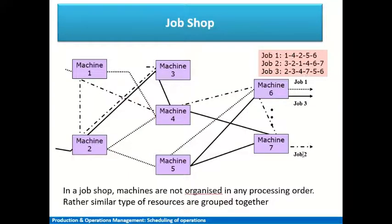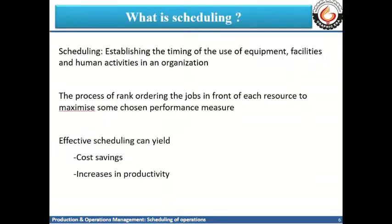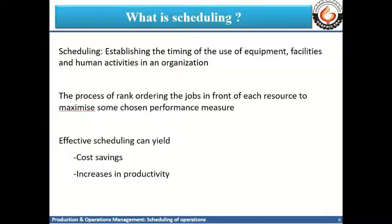Similarly, we can see that jobs two and three also have their own sequences. Once we have a fair understanding of shop configuration, we can talk about how to order multiple jobs in a shop for processing by various machines. This concept brings us to the term scheduling — also known by various terminologies, but scheduling is the most prevalent and established term for this ordering process.